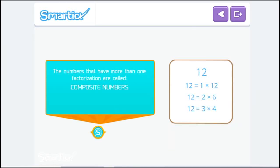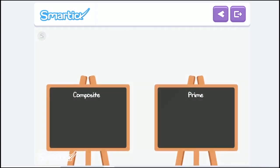And the numbers that have more than one factorization are called composite numbers, like 6, 8, and 12. To finish, let's decide whether these numbers are prime or composite. Place each number on the correct board.